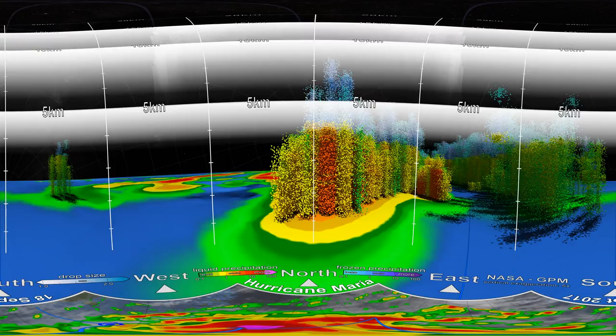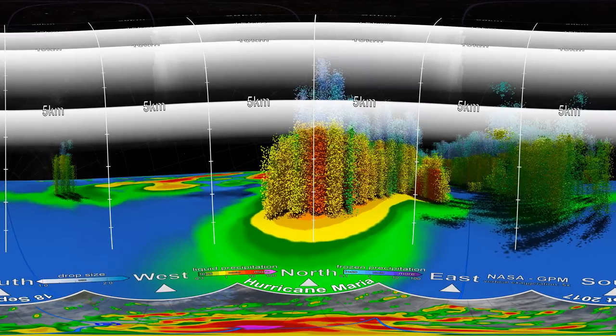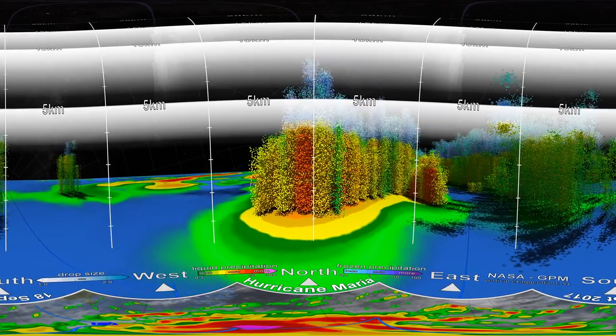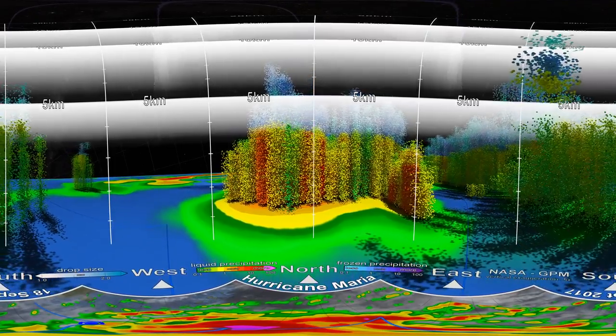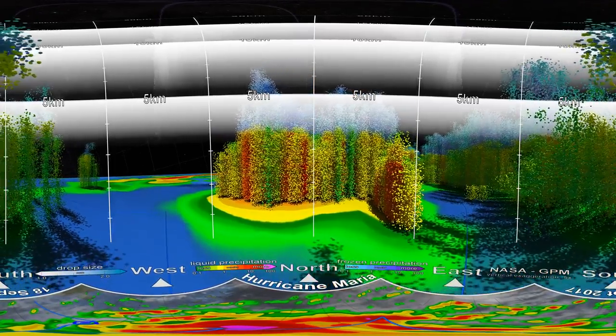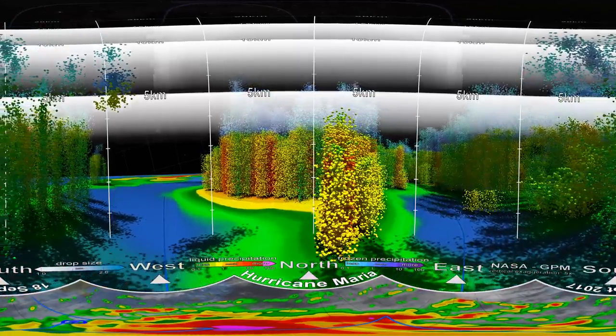We're currently inside Hurricane Maria when it was a Category 1 hurricane in September 2017. This was a few days before it rapidly intensified to a Category 5 hurricane. Look down and you'll see a map showing where we are inside Hurricane Maria and what the colours are showing.